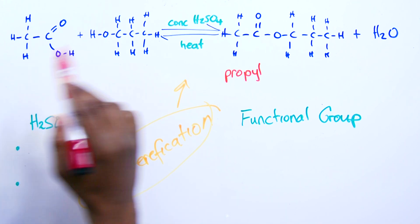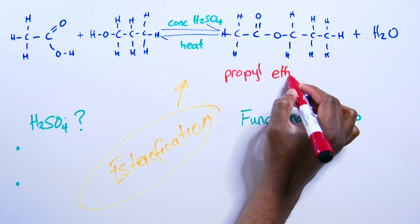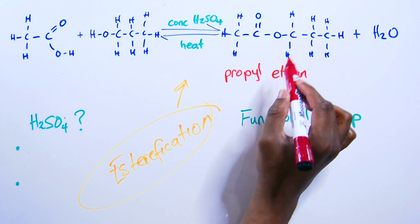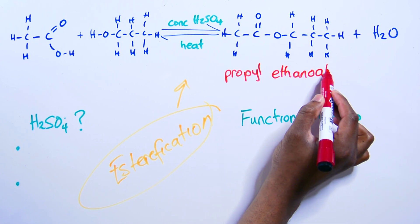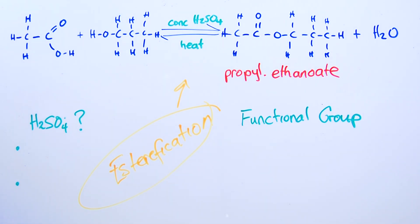So two. So that's ethanoic acid. So we'll just put ethanoate. And that's it. Alcohol part first. Acid part comes in. Propyl ethanoate.